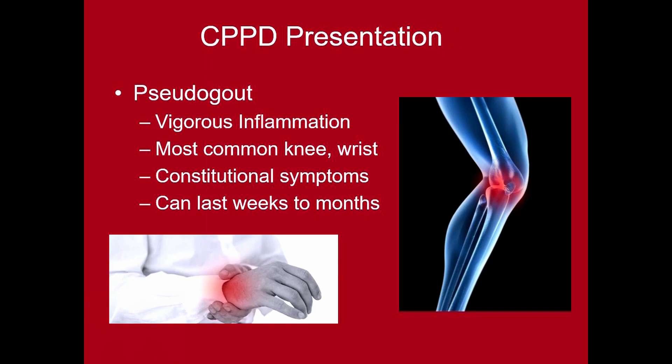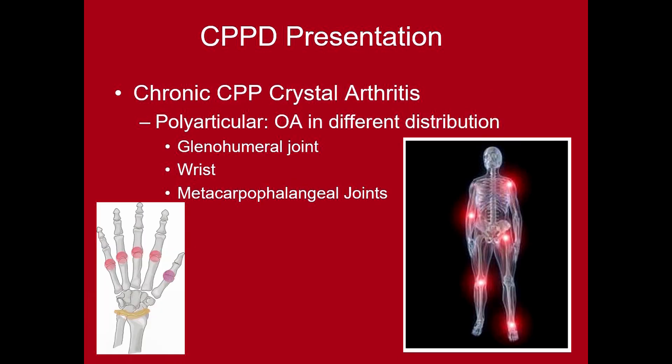The presentation can vary. The classic presentation we think of as pseudogout involves vigorous inflammation in the joint so aggressive it can look like gout or septic arthritis. The distribution is more common in the knee and wrist, but not the first metatarsal phalangeal joint as one sees in gout. Patients can have constitutional symptoms such as fever, and flares can last from weeks to months, which is different than gout, which lasts only several days to weeks.